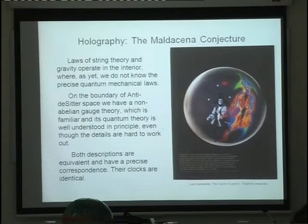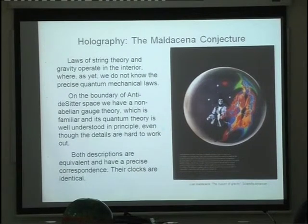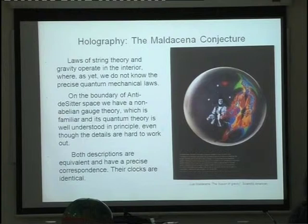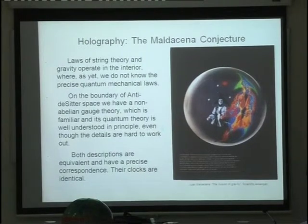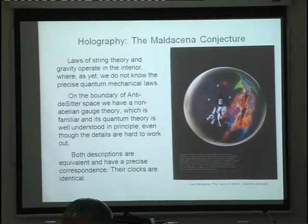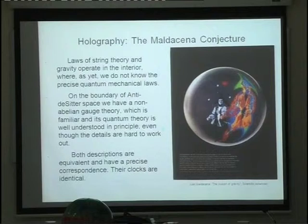This is the Maldacena conjecture. Maldacena is a young Argentinian physicist. String theory, in spite of all the work for so many years, has not been fully understood — we only understand bits and pieces. The question is: is it possible in even one circumstance to formulate the theory completely? And the answer is yes. This is a very great achievement, and it is called holography. A hologram gives a three-dimensional reconstruction from phase differences in one lower dimension.